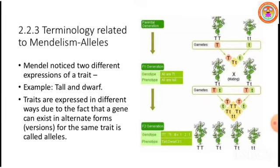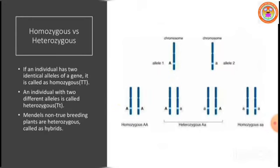Traits are expressed in different ways due to the fact that a gene can exist in alternate forms or versions of the same trait called alleles. If an individual has two identical alleles of a gene, it is called homozygous. A zygote which carries two alleles that are identical — for example, capital T capital T — denotes tall as a trait in Pisum sativum.